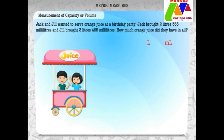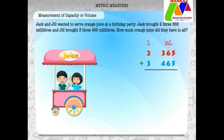Jack and Jill wanted to serve orange juice at a birthday party. Jack brought 2 liters 365 milliliters and Jill brought 3 liters 465 milliliters. How much orange juice did they have in all? Here, we have to perform addition. Adding 2 liters 365 milliliters and 3 liters 465 milliliters, we get 5 liters 830 milliliters.